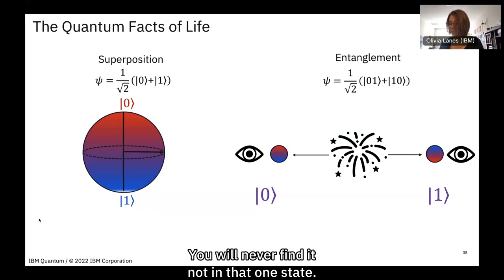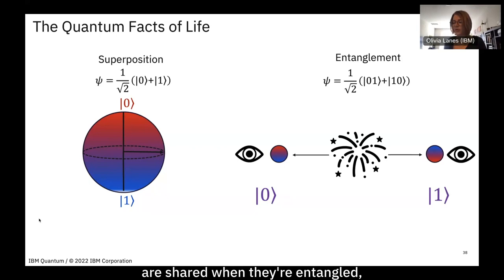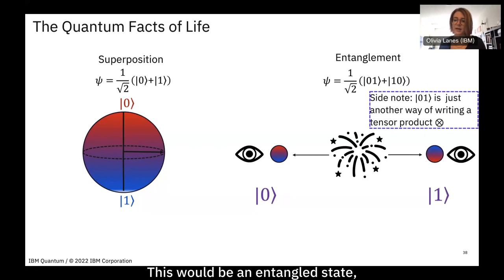The properties between two entangled qubits are shared, and neither qubit's state can be completely described independently of the other. This is the symbol we use to describe an entangled state, and another way of noting this is with a tensor product, which we'll discuss later.